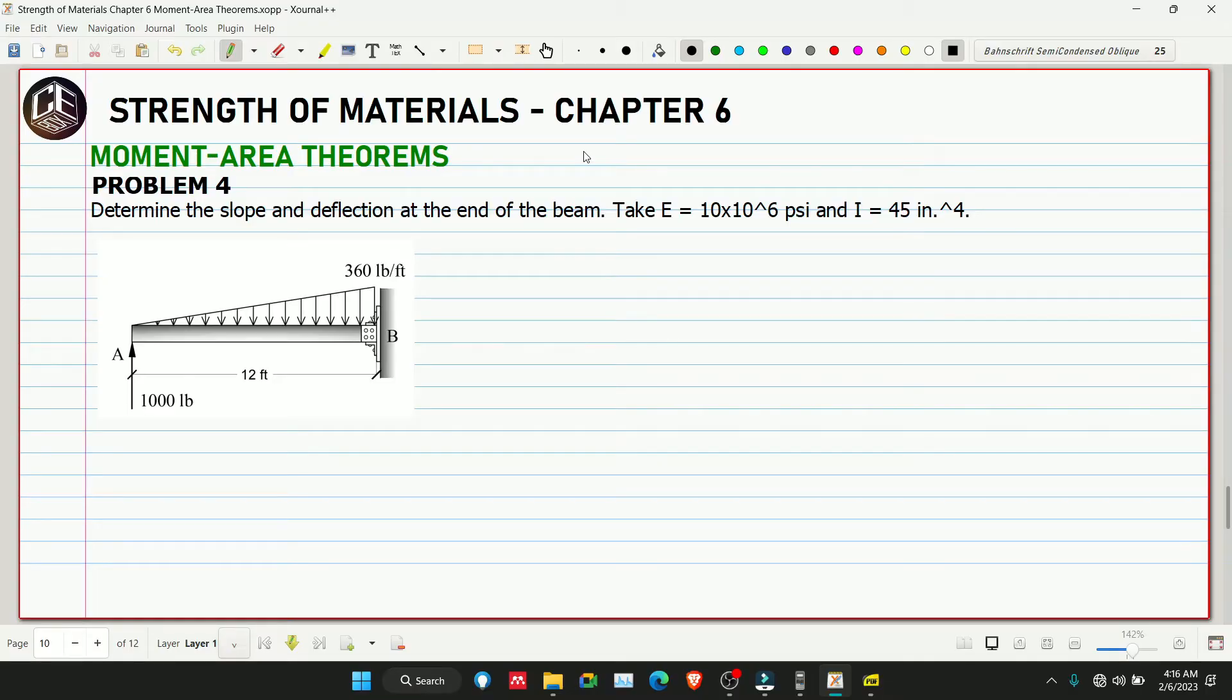Hey guys, welcome back to CBOX tutorial channel. This is our problem number 4 for moment area theorems. Determine the slope and deflection at the end of the beam. Take E is equivalent to 10 times 10 raised to 6 psi and I is equivalent to 45 inch raised to 4.